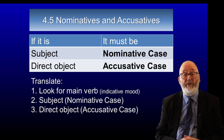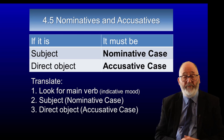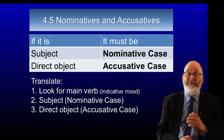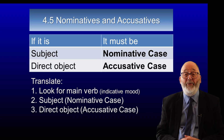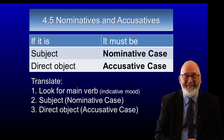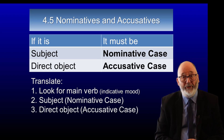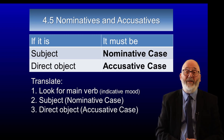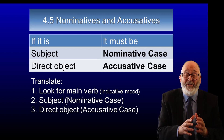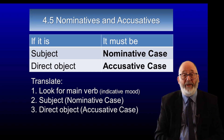Most nominatives that you find in the New Testament are, in fact, the subject of a verb. Many of the accusatives are the direct object of a verb. Even though we don't have a lot of grammar yet, we can already formulate good rules for translating that are actually very powerful — steps you will follow no matter how complex the sentence becomes. The first thing you look for is the main verb. Then look for the subject of the verb. Then look for the direct object, which will be in the accusative case.